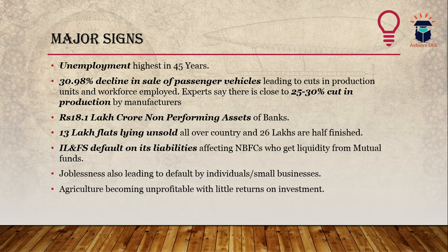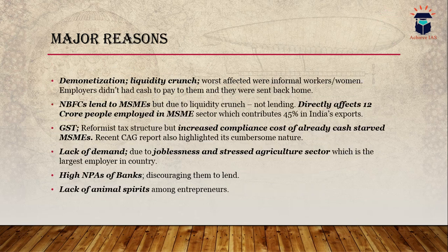When people employed in agriculture are not getting profit, they cannot demand the manufactured goods made in industries, leading to a slump in economic activity. Now let's focus solely on the major reasons. First, demonetization was the biggest body blow to the economy because it created a liquidity crunch. While its positive impact is debatable, it clearly affected the informal sector the worst.